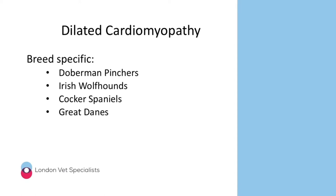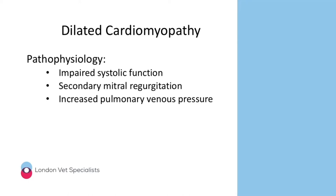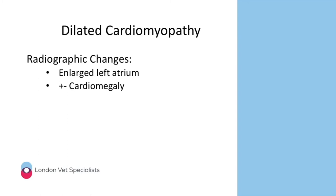For dilated cardiomyopathy, the dog I've seen most commonly is the Doberman, though other breeds like Irish Wolfhounds, Great Danes, and Cocker Spaniels can also get it. DCM results in impaired systolic function, which causes secondary mitral regurgitation due to reduced myocardial contractility. That leads to increased pulmonary venous pressure in the same way as mitral valve disease. Radiographically, we'll see a big left atrium and possibly evidence of generalized cardiomegaly.